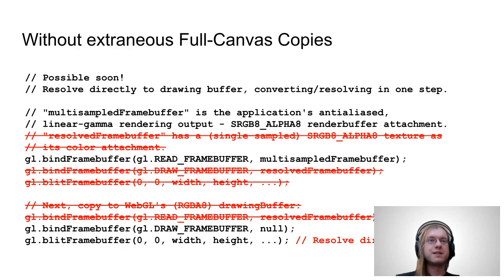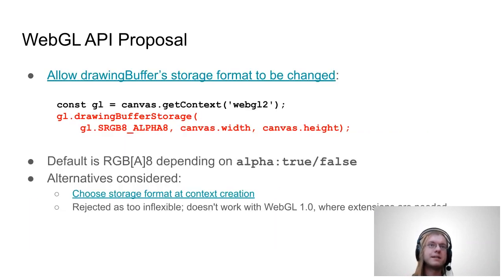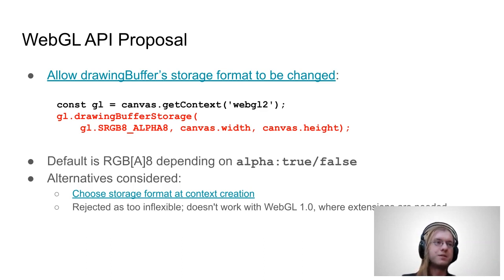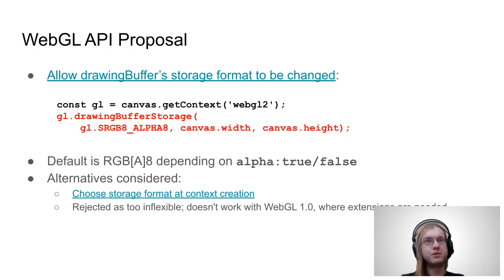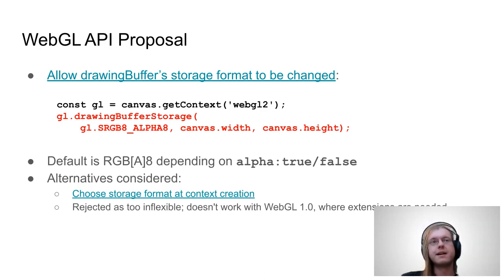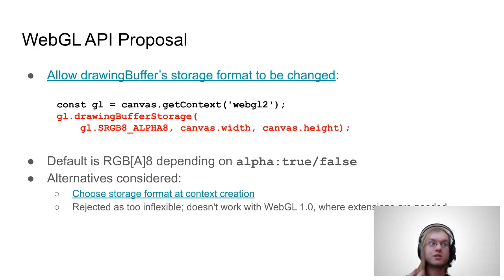What code is actually making that possible? Well, in WebGL that would be the new drawingBufferStorage function that we're looking to add. This will be very similar to renderbufferStorage, and you specify the format you want — sRGB8 alpha8 in this case — and that's what we set your backbuffer to. That's what lets you skip that full-screen blitz that we talked about earlier.